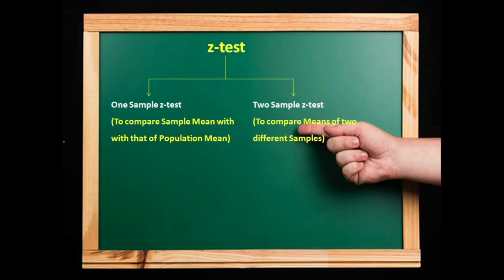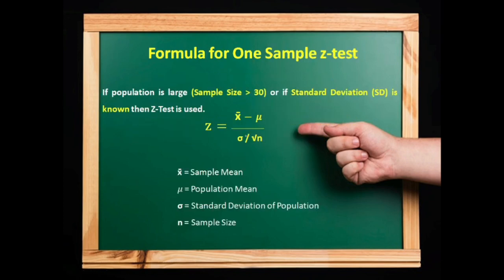Z-test is of two types. First is one sample test to compare sample mean with that of population mean. In case of two sample test, to compare means of two different samples.